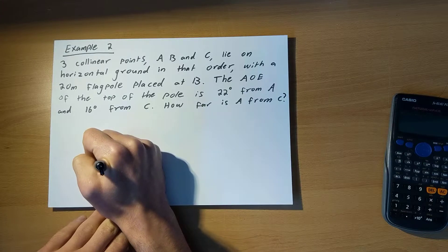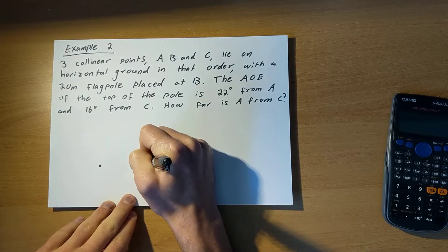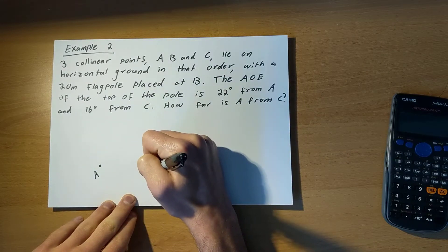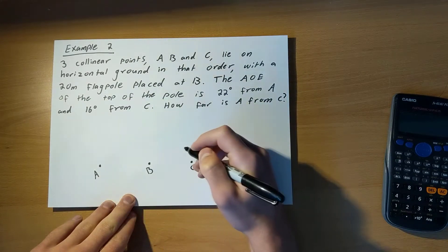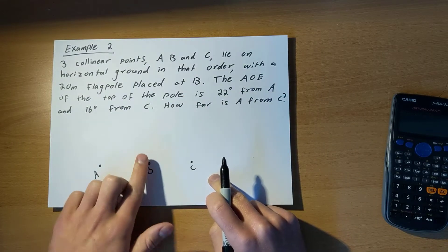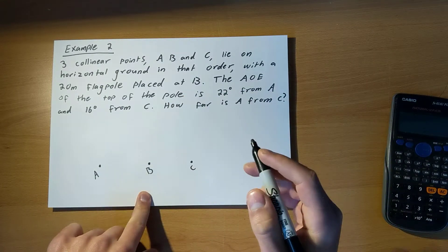So let's draw those. I've got A, B, and C. They are collinear. They're all in the same line. And they're in that order, A, B, C. With a 20 metre flagpole placed at B.